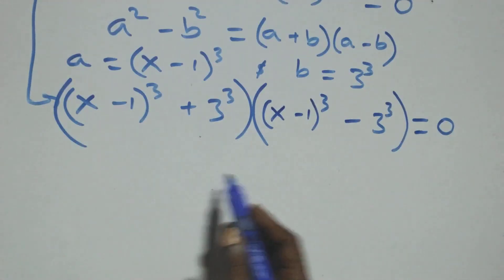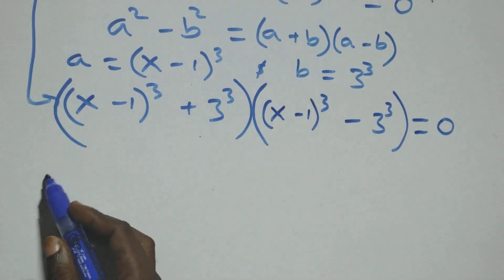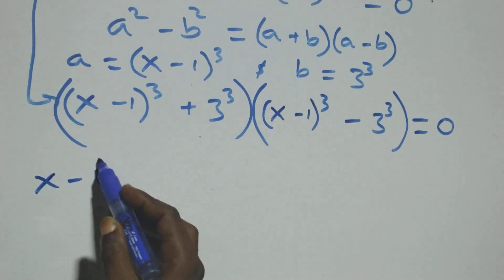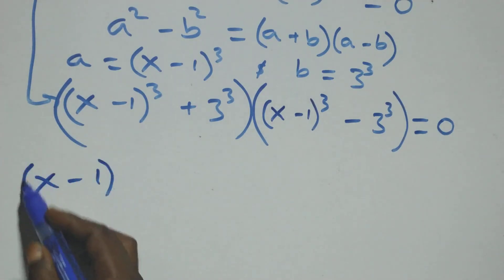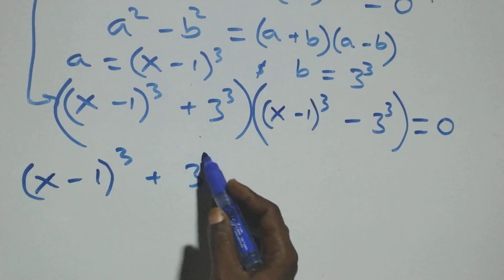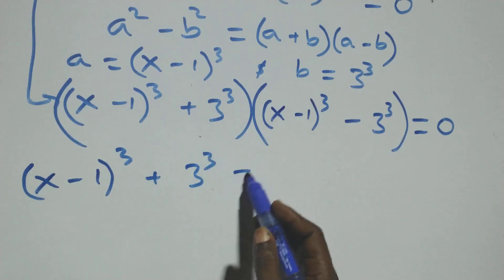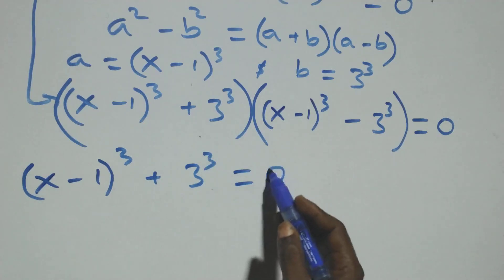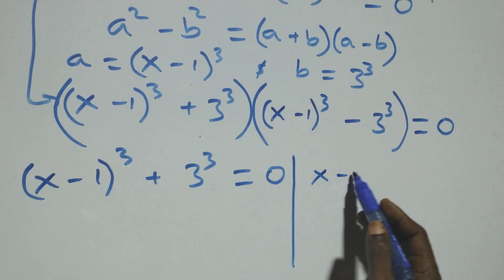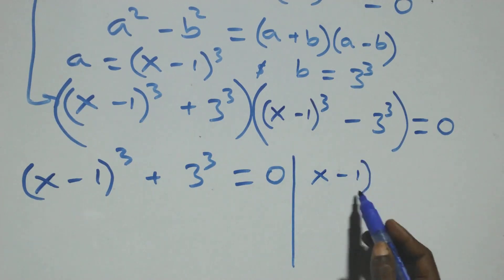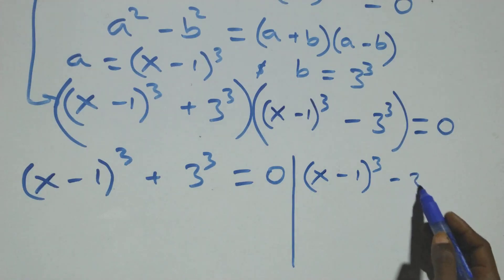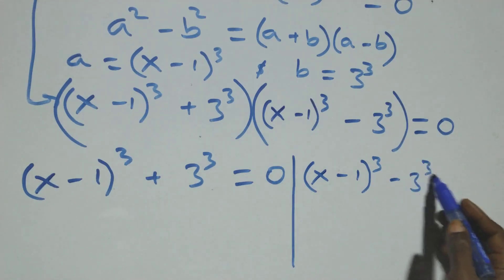Then here we have 2 possible cases. The first one: x minus 1 raised to the power 3, plus 3 raised to the power 3, equals to 0. Or we have x minus 1 raised to the power 3, minus 3 raised to the power 3, equals to 0.